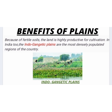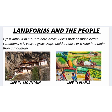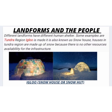Now we will see about landforms and the people. Humans have been living on different kinds of landforms in different ways. Life is difficult in mountainous areas, and plains provide much better conditions. It is easy to grow crops, build houses or roads on a plain than on a mountain. Different landforms have different human shelters. In Tundra regions, igloo is made — it is also known as a snow house or snow hut. Houses in Tundra regions are made of snow because there are no other available resources for construction.